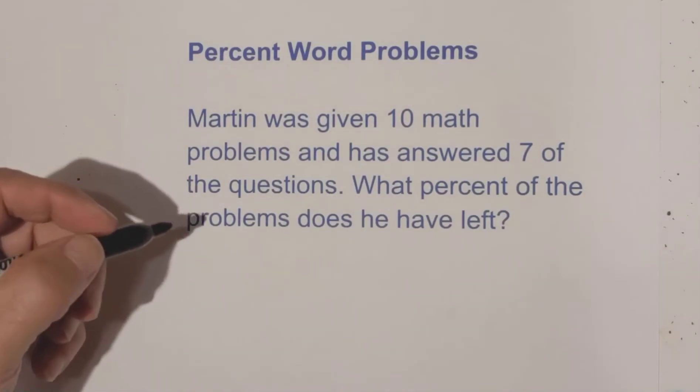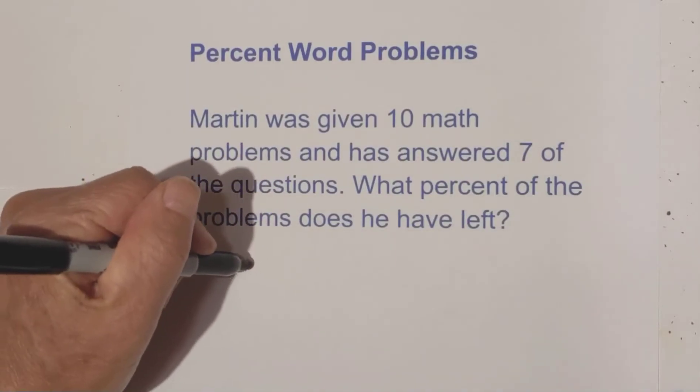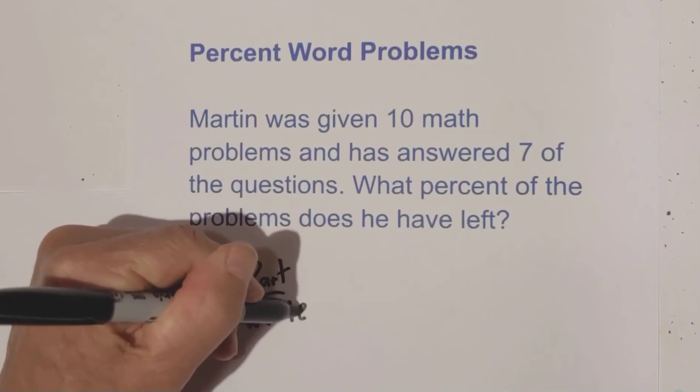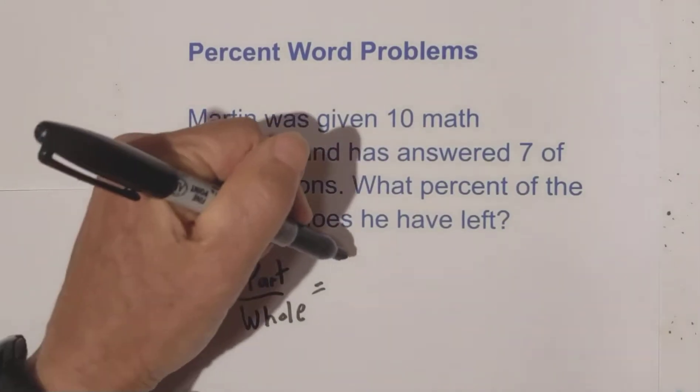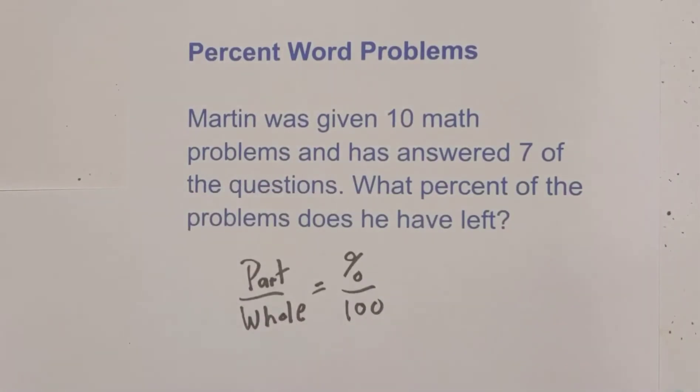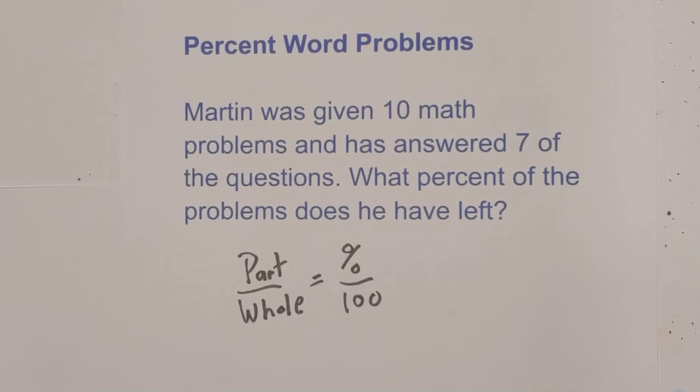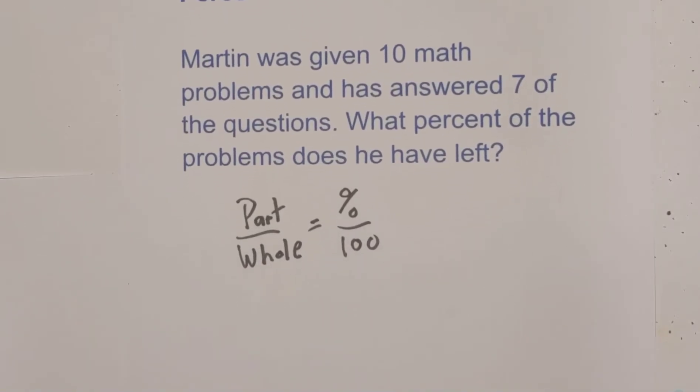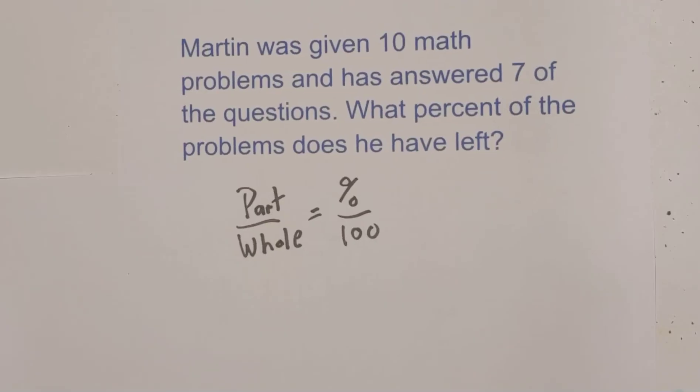Well what you can do in order to solve this you can use part over whole and we'll set it up like a proportion and this will be percent over 100. And then all you have to do is fill in what each of these are and see what your missing portion is. So I'm going to move this up a little bit. There's the problem and let's try this.